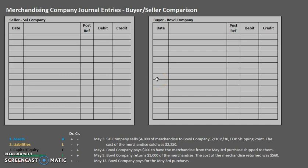The accounts that you are going to want to look for are Customer Refunds Payable and Estimated Returns Inventory. If your textbook uses those accounts, this is likely the video for you. Otherwise, you might want to take a look at our older video — I will leave that link in the description down below.